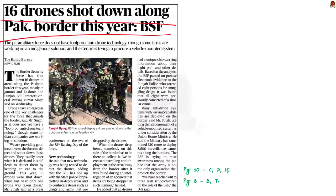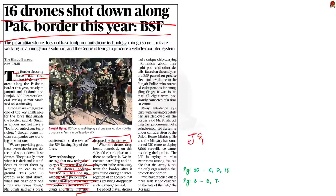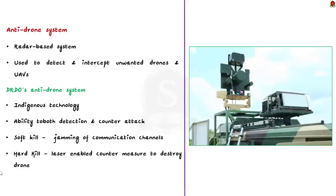Now take a look at this news article. It reports that 16 drones were shot down along the Pakistan-India border this year by the Border Security Force. New technology is being tested to effectively detect the drones. The BSF has also tied up with state police for patrolling in-depth areas and to confiscate arms and drugs dropped by drones. Jammu and Kashmir and Punjab are the two regions facing the menace of increased rogue drone transgressions. Let us learn about what an anti-drone system is and the indigenously developed anti-drone system of DRDO.